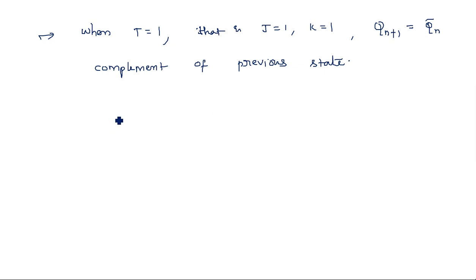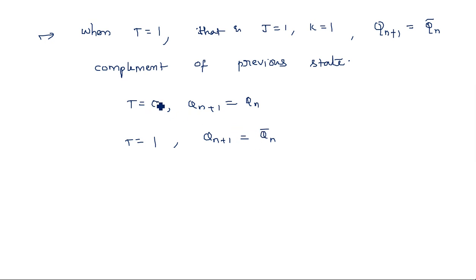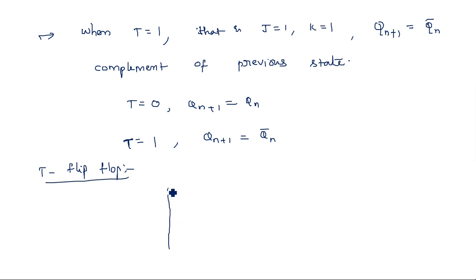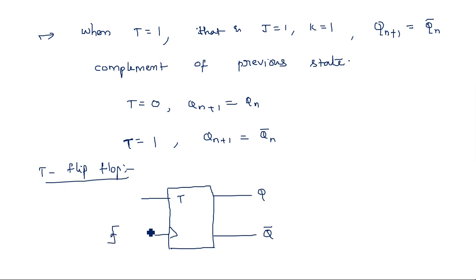When T=0 the output is the previous state, and when T=1 the output is the complement of the previous state. This is the toggle flip-flop operation. If you want the output to be toggled, you have to give T=1. The T flip-flop block representation is a rectangle with input T, outputs Q and Q-bar, and a rising-edge clock.